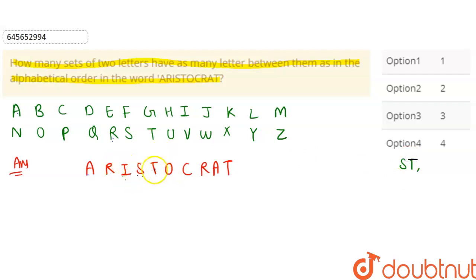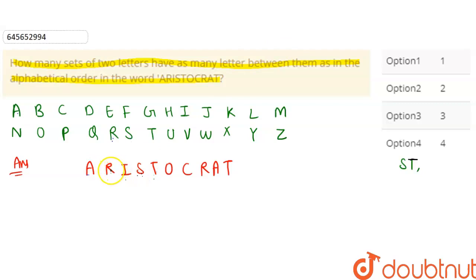Then check S and O — between S and O in the word, checking: not matching. Then S and T — between S and T: not matching, the letter needed is not found. Then check T and R — between T and R in the word: one, two; and between T and R in the word here only: not matching. T and I — not matching. T and I — not matching.